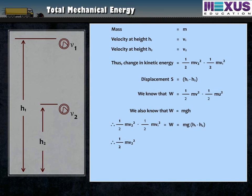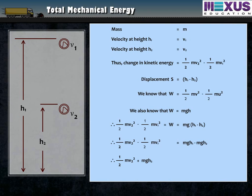Or, ½MV2² − ½MV1² = MgH1 − MgH2. Rearranging, ½MV2² + MgH2 = ½MV1² + MgH1. That is, K2 + U2 = K1 + U1, showing that the total mechanical energy (kinetic plus potential) remains constant for a freely falling body.